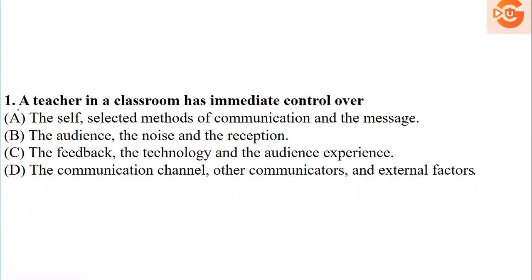The first question tells you: a teacher in a classroom has an immediate control over what? From the given list, the first option is the self, selected methods of communication, and the message. The second option is the audience, the noise, and the reception — but noise is not a controllable factor.